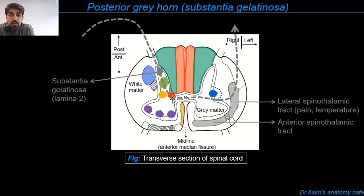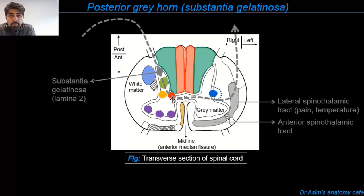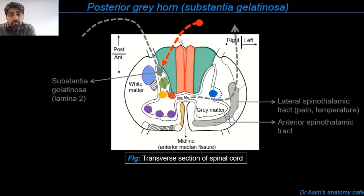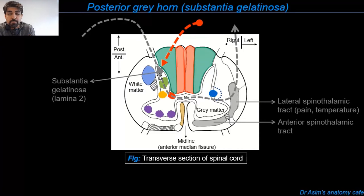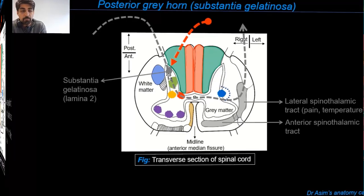Different ascending and descending pathways cross at different points in the spinal cord or at different regions inside the central nervous system — this crossing is known as decussation. Additionally, the substantia gelatinosa also receives input from descending fibers coming from various supraspinal levels. Hence, the sensory information of pain and temperature inside the substantia gelatinosa can be modified or modulated by excitatory or inhibitory influences from supraspinal levels, including the cerebral cortex. We'll discuss this pain modulation phenomenon in detail in a subsequent video.